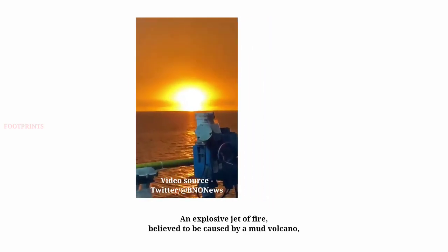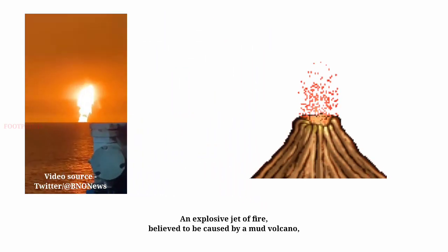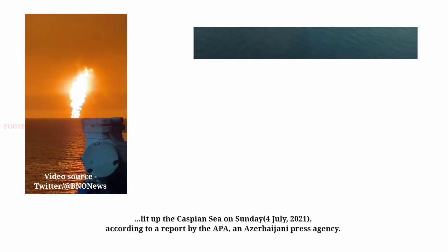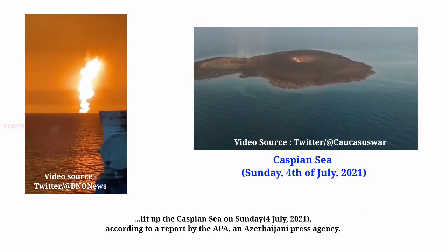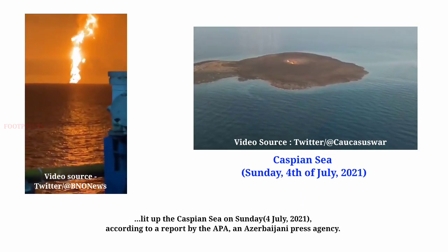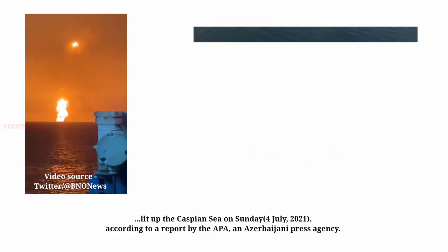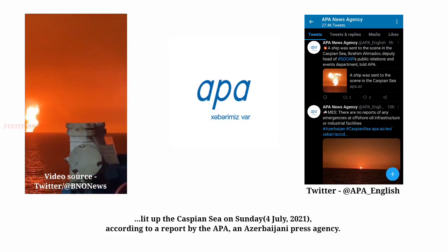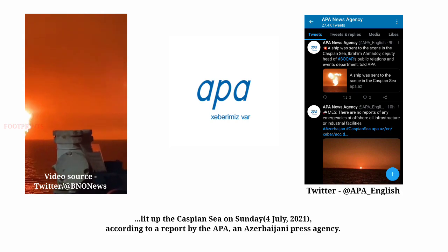An explosive jet of fire, believed to be caused by a mud volcano, lit up the Caspian Sea on Sunday, 4 July 2021, according to a report by the APA, an Azerbaijani press agency.